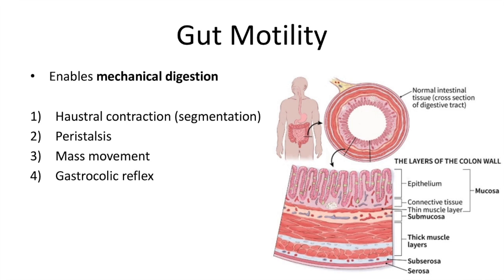All movements are possible because of the gastrointestinal wall layers, as can be seen in the picture. We can see the muscle layers over here. There are two muscle layers: one is longitudinal and the other one is circular.